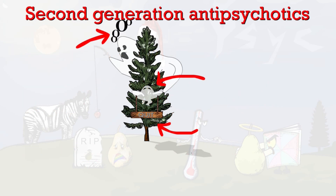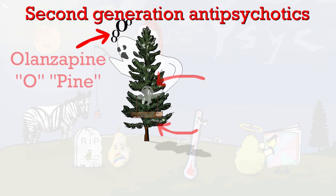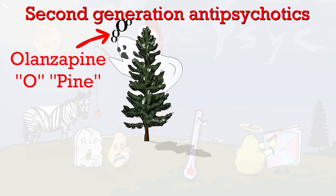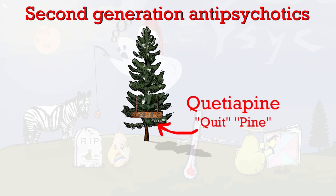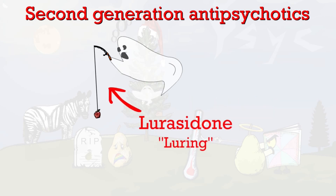The pine tree is associated with three other medications. The O's coming out of the ghost represent olanzapine — 'olanzapine.' The ghost ascending up the pine tree represents asenapine — 'ascending pine, asenapine.' The sign hanging down from the pine tree reminds you of quetiapine — 'quit pine, quetiapine.' The ghost luring the zebra is lurasidone — 'luring, lurasidone.'